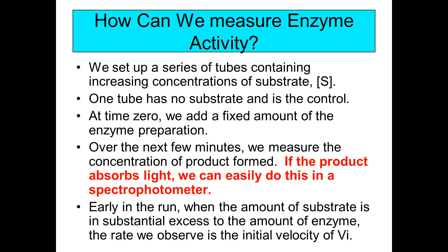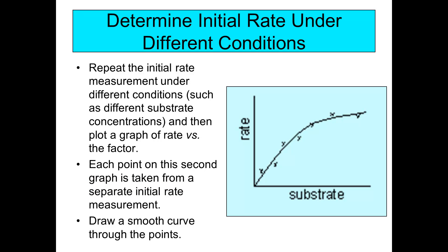Early in the run, when substrate is in substantial excess relative to the enzyme, what you observe is the initial velocity VI. In this kind of plot you're measuring the initial VI as the substrate concentration increases, which enables you to find the substrate concentration that gives the maximal rate Vmax. You repeat this initial rate measurement under different conditions, then plot the graph of rate versus the factor. Each point on the second graph comes from a separate initial rate measurement, drawing a smooth curve through the points to obtain the maximum velocity.